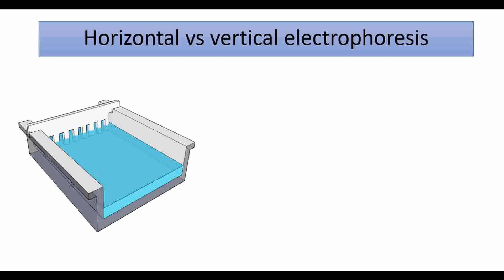In horizontal gel electrophoresis, the gel is made up of one gel concentration at one pH value and is immersed totally in the running buffer. Then the sample is subjected to migrate from the negative side towards the positive side.